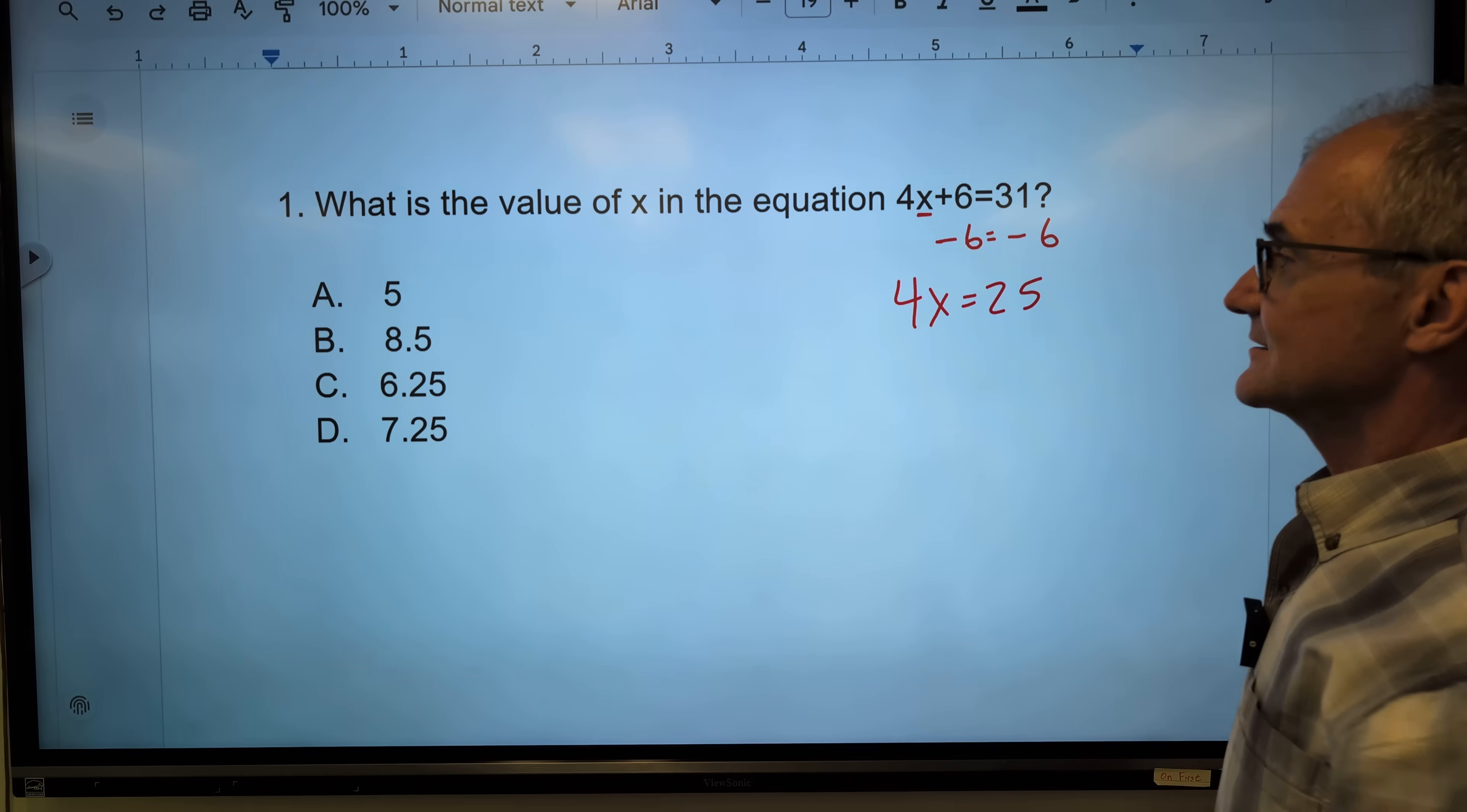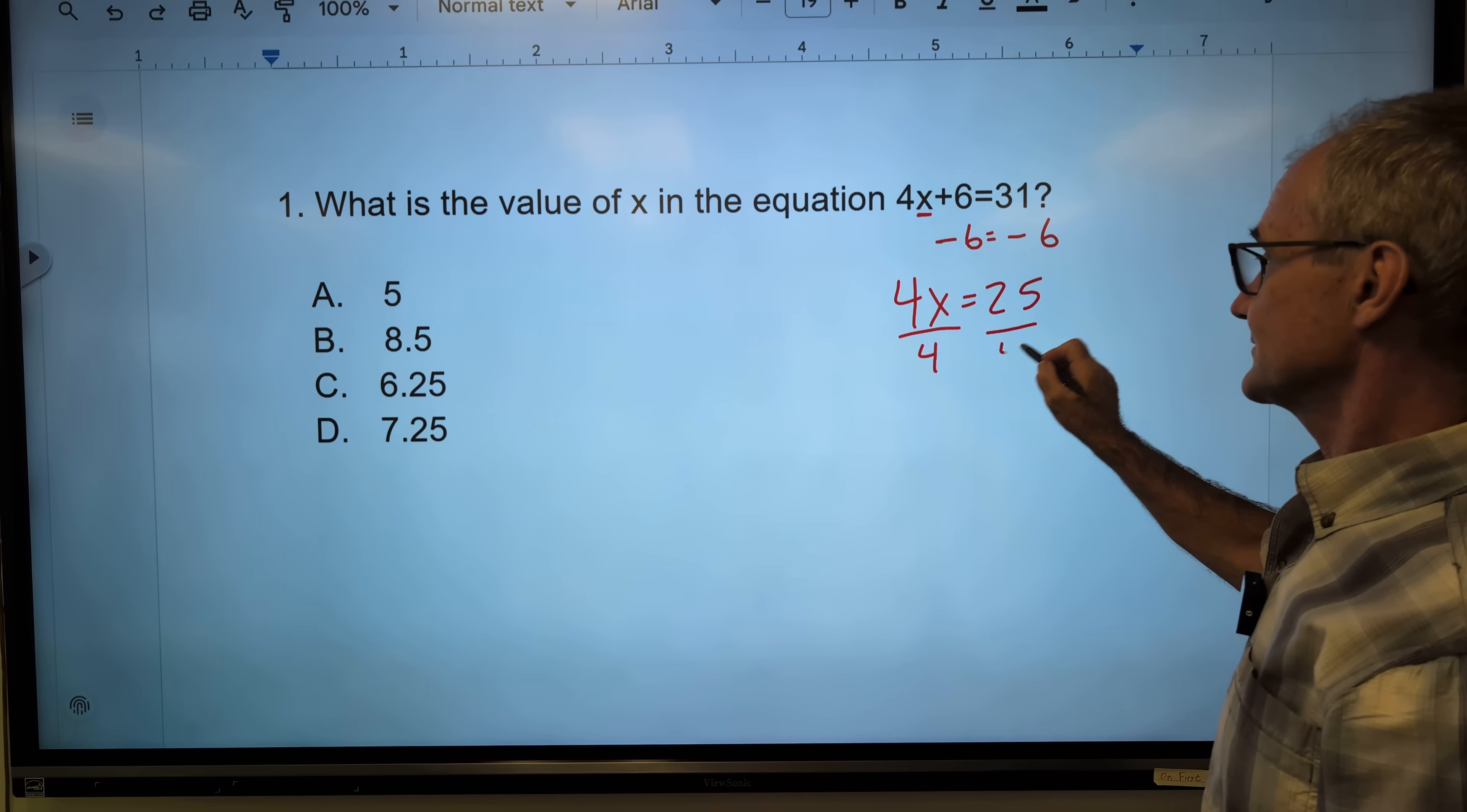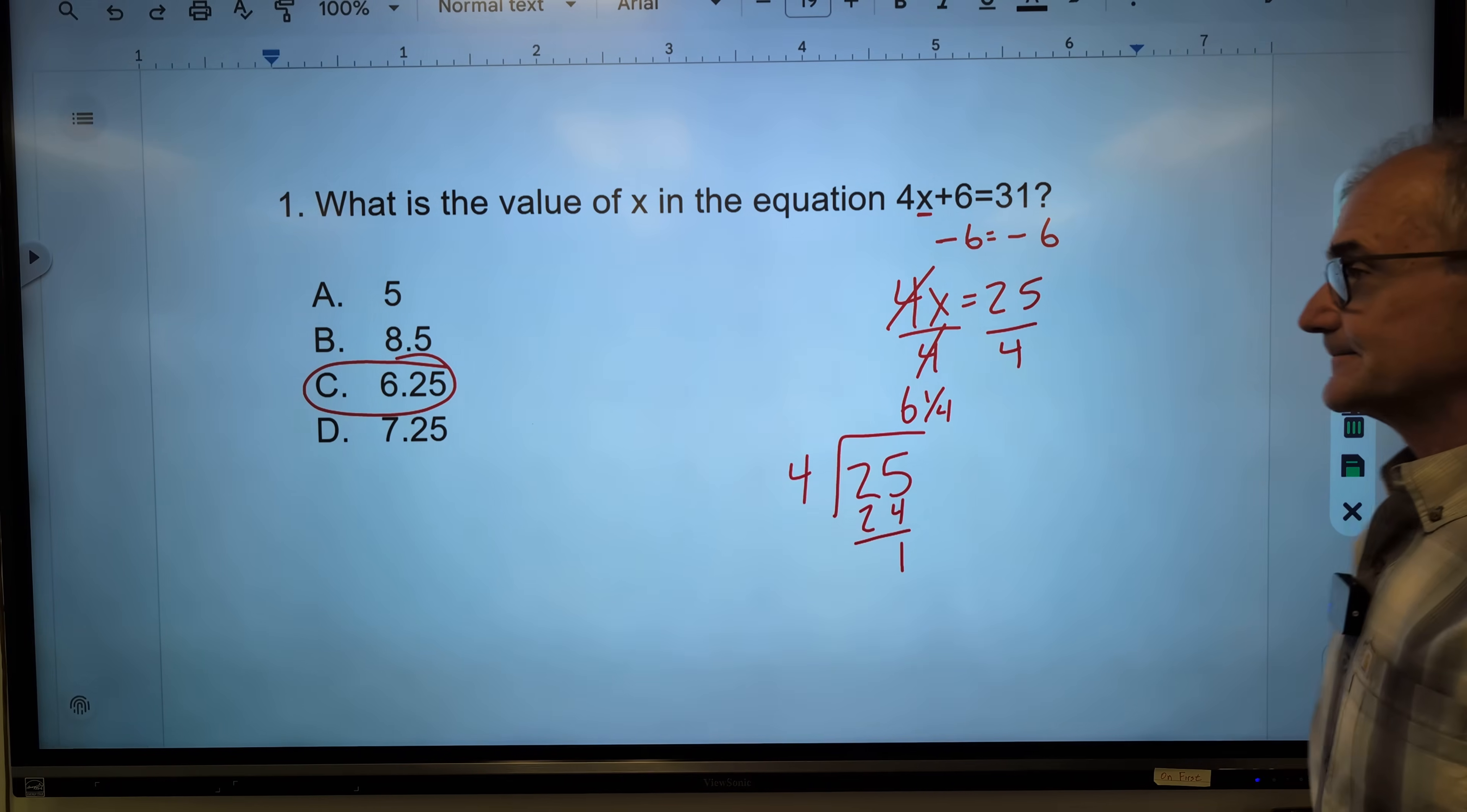At this point, I'm going to look at my answers. It is kind of jumping out at me that this is probably the correct one because 4 times 6 is 24, 4 times a quarter is 1 to give me 25. So the correct answer is C. If I wanted to solve this, I could divide both sides by 4. X is by itself. 25 divided by 4 - 4 goes into 25 six times, giving me 24. This could be a fraction one-fourth, so it is 6 and a quarter, or the decimal equivalent 6.25.